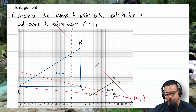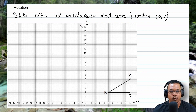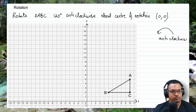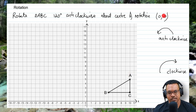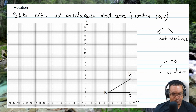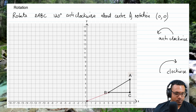Now for the fourth transformation: rotation. We rotate triangle ABC 120 degrees anticlockwise about the center of rotation at (0, 0) — the origin. Anticlockwise means going this way, and clockwise means going the other way. We mark the center of rotation at the origin and draw light lines from it to all points on the object: B, A, and C.